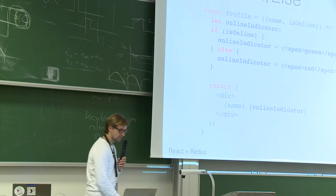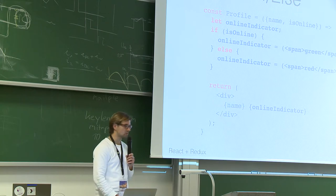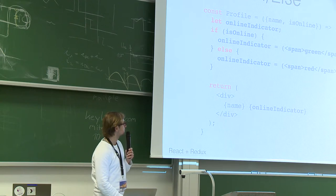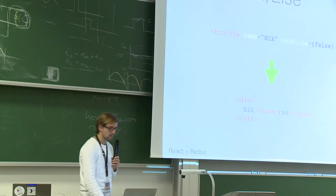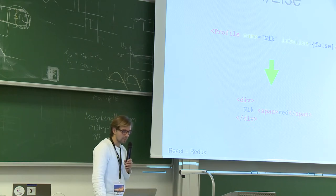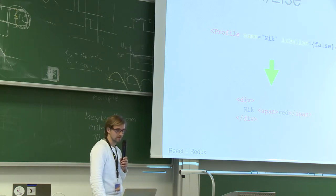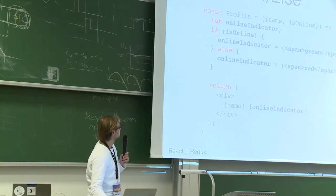For example, a profile with an online indicator: if the user is online, a span is rendered green. If the parameter 'isOnline' is false, we make it red. So if you use this component passing 'name: Nick' and 'isOnline: false', it returns the HTML with the span in red, because we go to the else state.